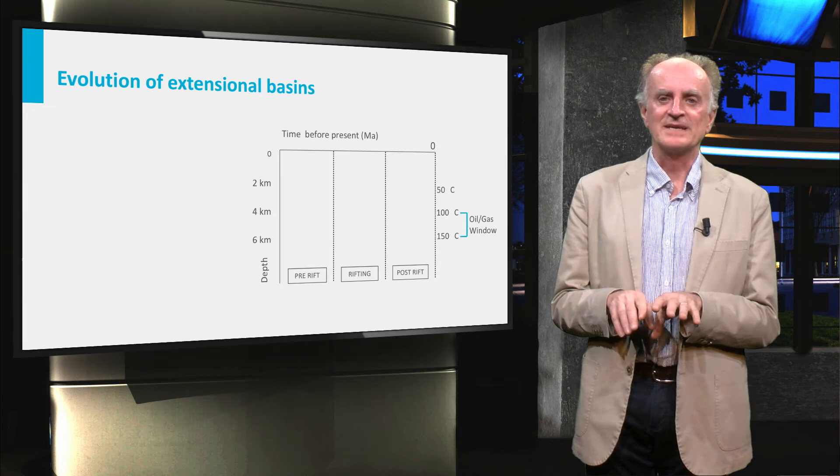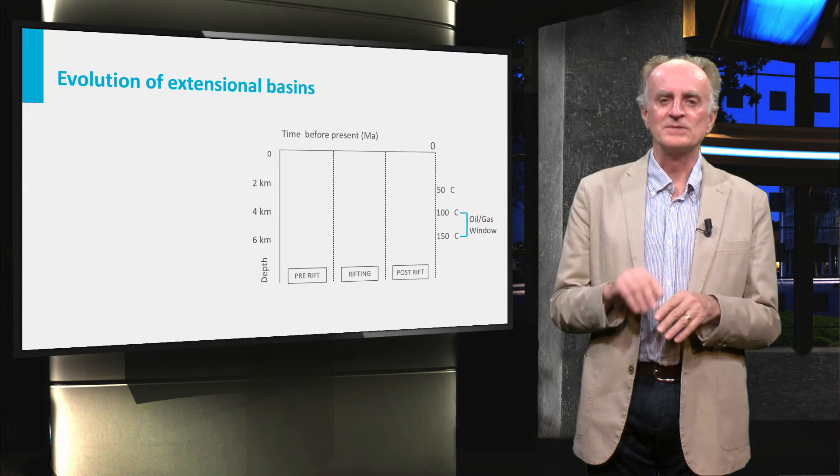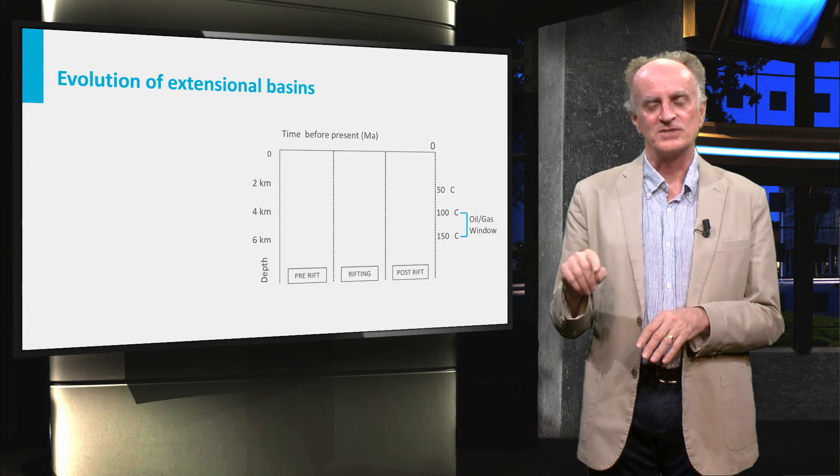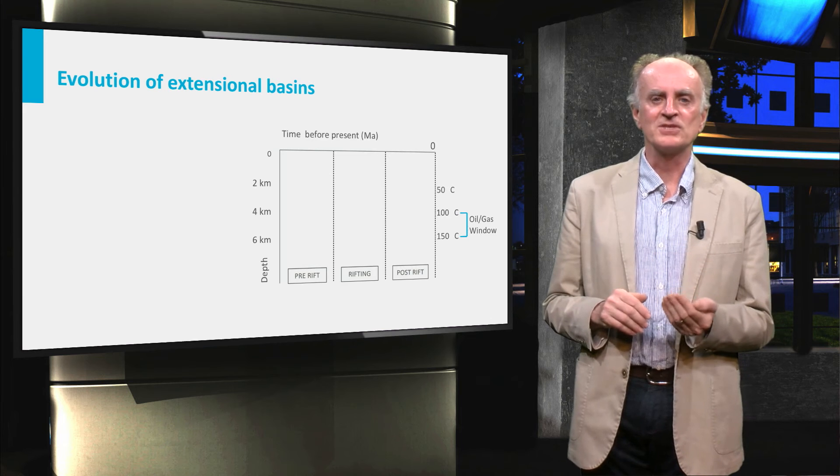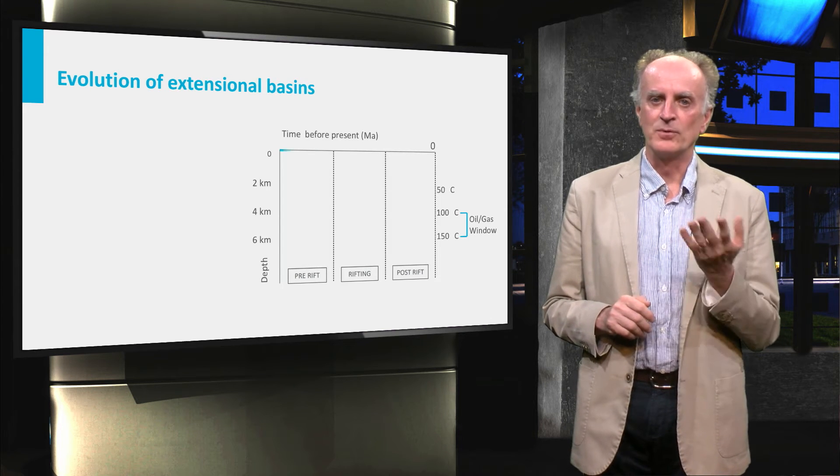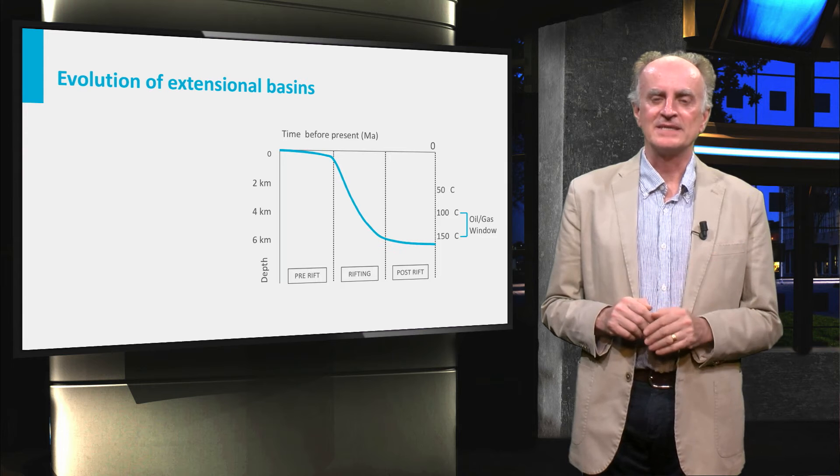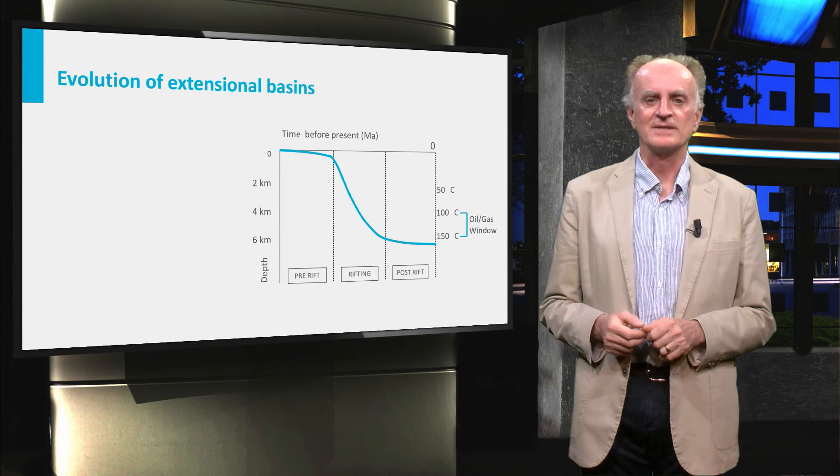Vertical movements in sedimentary basins can be documented using a subsidence curve, which describes the vertical position of a point during rifting. The blue curve in the slide is a typical subsidence curve in an extensional setting.